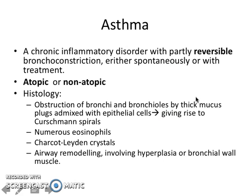Asthma is another type of chronic obstructive pulmonary disease. It is a chronic inflammatory disorder with partly reversible bronchoconstriction, reversible either spontaneously or with treatment, and can be due to allergy or atopy, or non-atopic. Histologically, there is obstruction of bronchi and bronchioles by thick mucus plugs mixed with epithelial cells, giving rise to Curschmann spirals when expectorated. Numerous eosinophils are present due to the allergic nature, and Charcot-Leyden crystals form from degranulation of eosinophils.